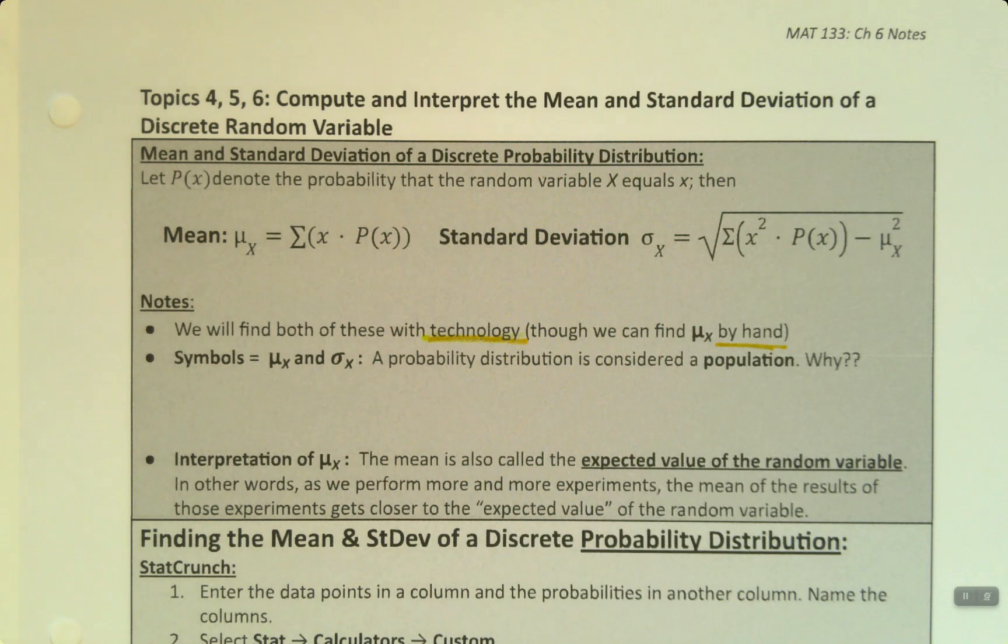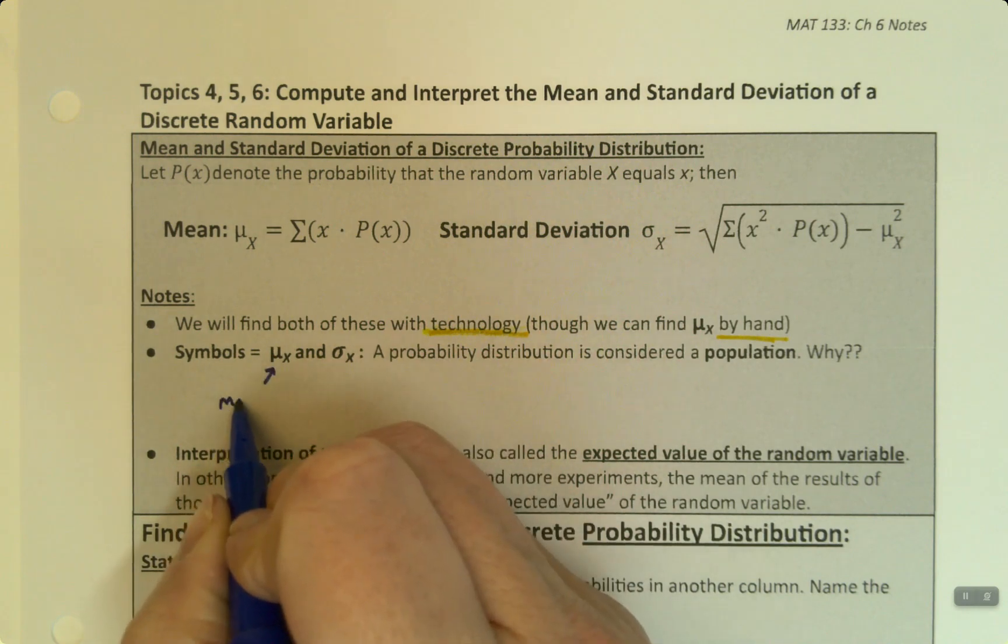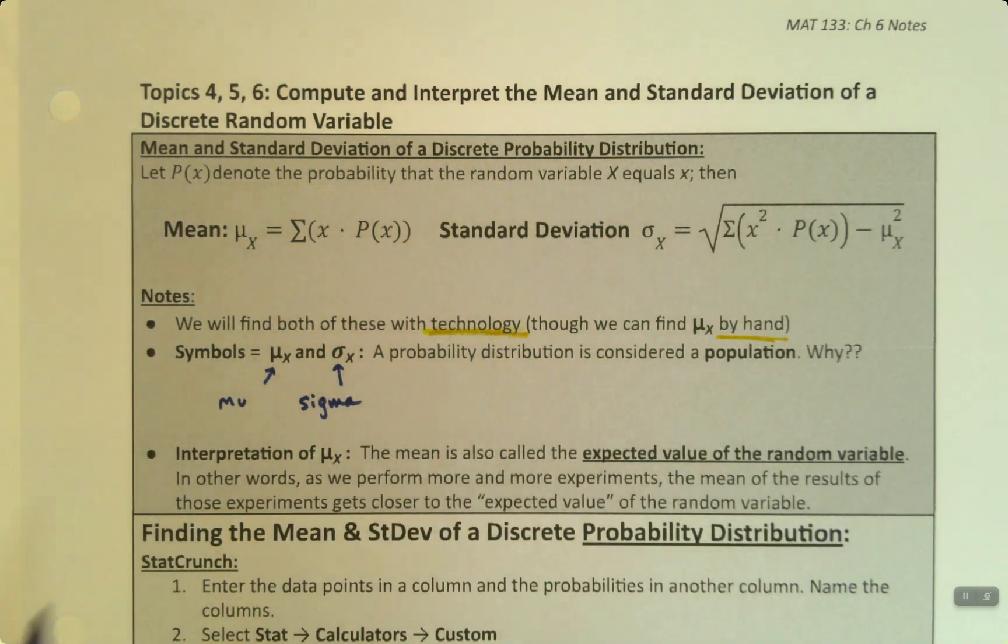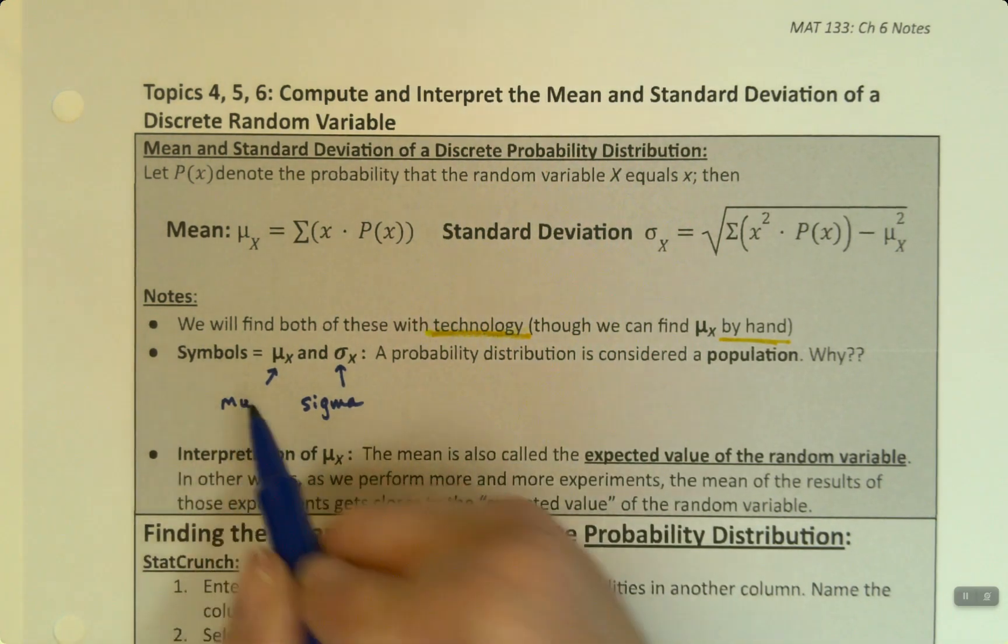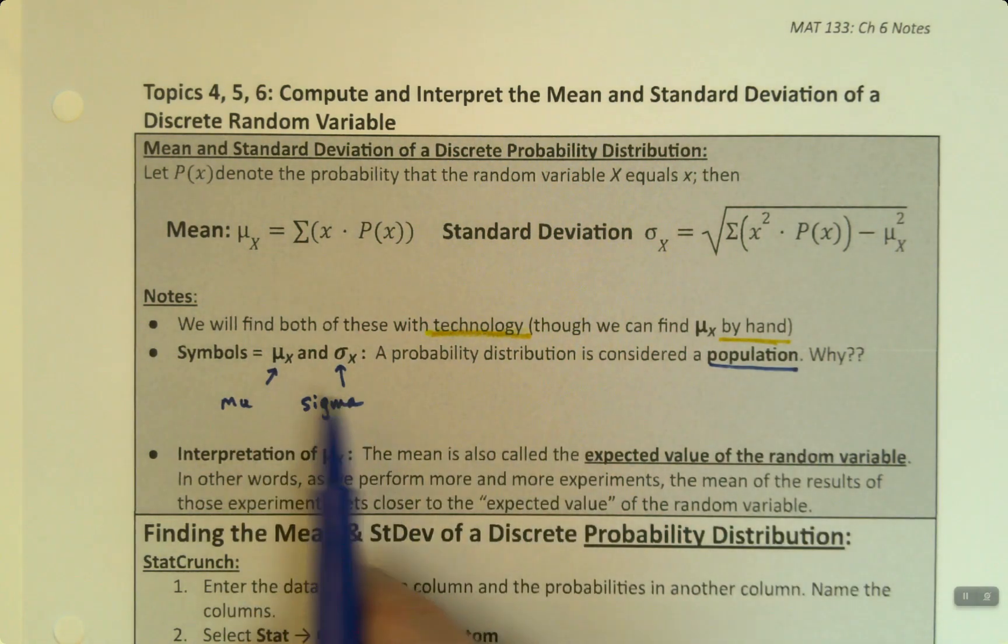Alright, so before I go any further, wait a second, these symbols, we've seen these, right? So this is mu, this is sigma. It looks like an O with a tail on it. They're Greek letters. Mu and sigma. And the reason we use them is they're the population symbols.